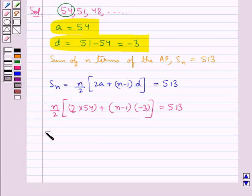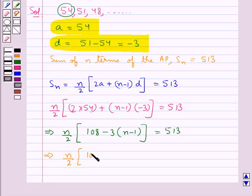This further gives us n/2 times [108 - 3(n-1)] equals 513. From here we get n/2 times [108 - 3n + 3] equals 513.